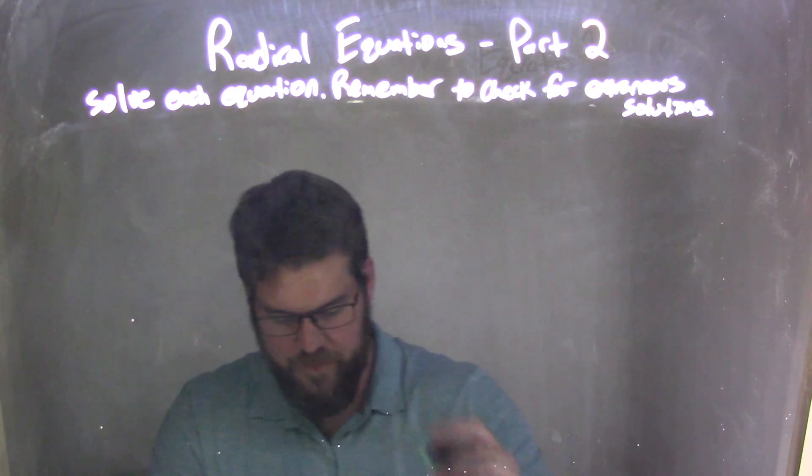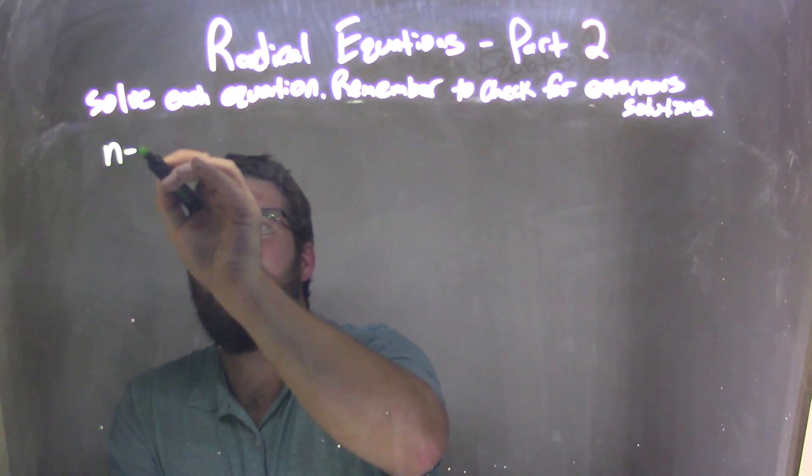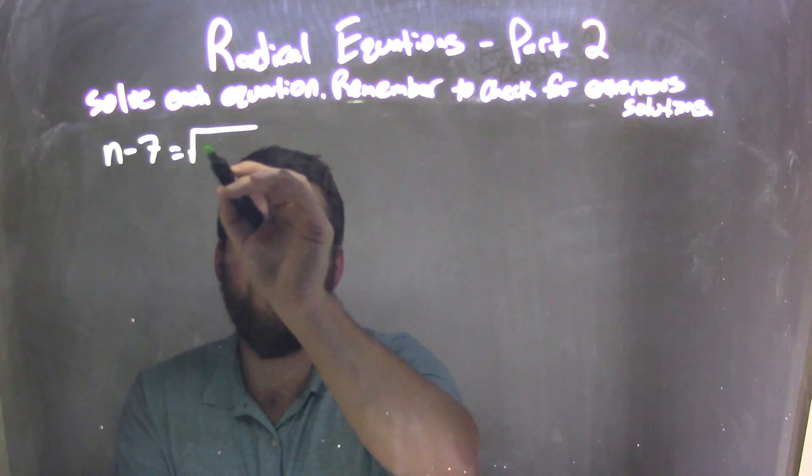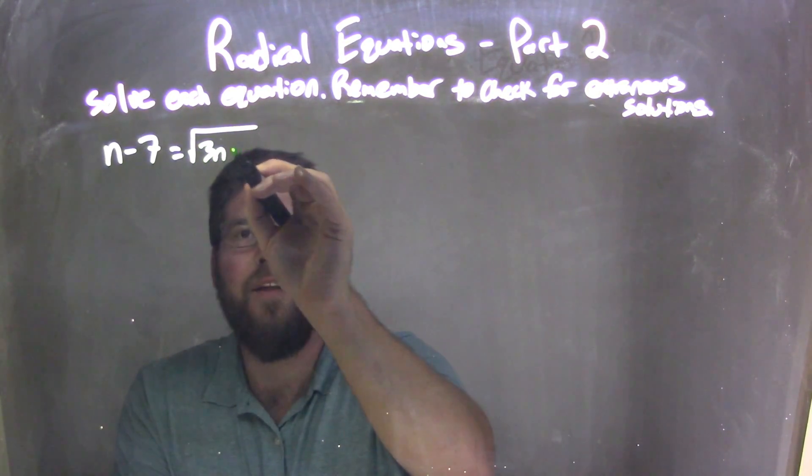If I was given this equation, n minus 7 equals the square root of 3n minus 21.